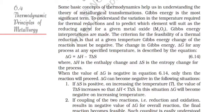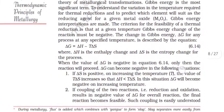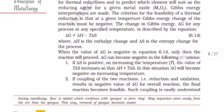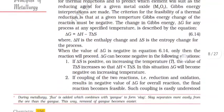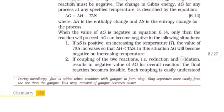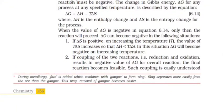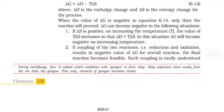The criteria for feasibility of a thermal reduction is that at a given temperature, Gibbs energy change of the reaction must be negative. The change in Gibbs energy ΔG for any process at any specified temperature is described by the equation ΔG = ΔH - TΔS, where ΔH is the enthalpy change and ΔS is the entropy change for the process. When ΔG is negative only then the reaction will proceed.